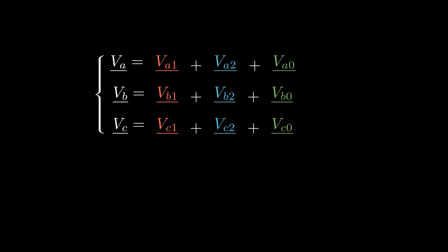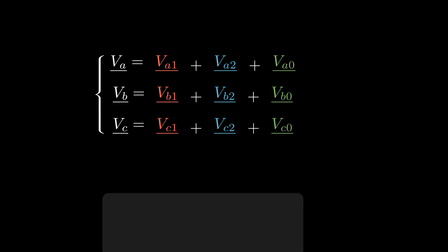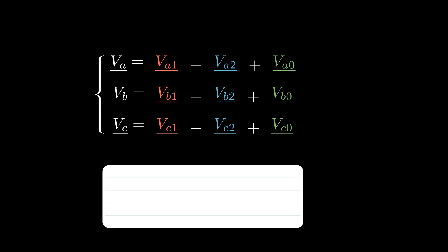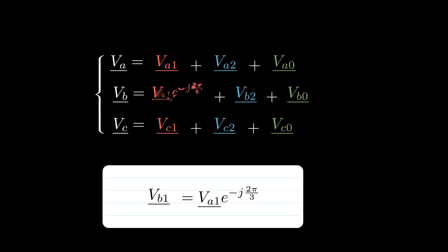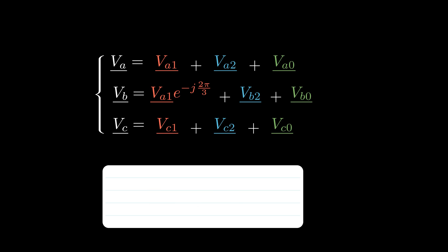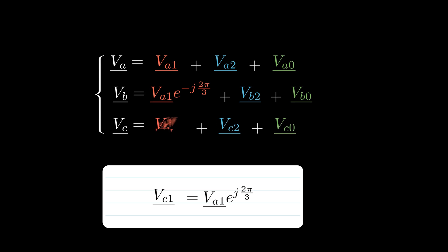Now let's find a concise formulation for these equalities. We know that phase B of the positive sequence is identical to phase A but lags by 2π/3. We can then replace phase B in the equations. Similarly, phase C is the same as phase A but leads by 2π/3, and we can replace phase C in the equations.